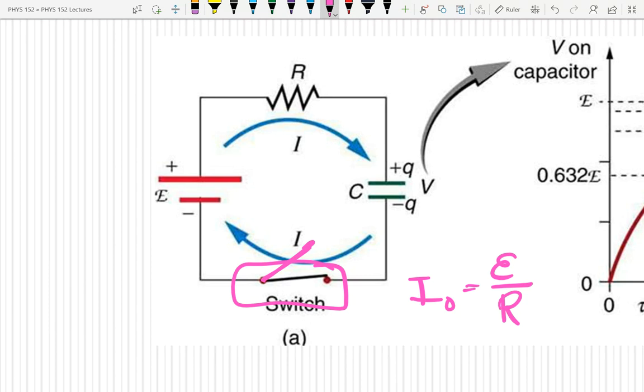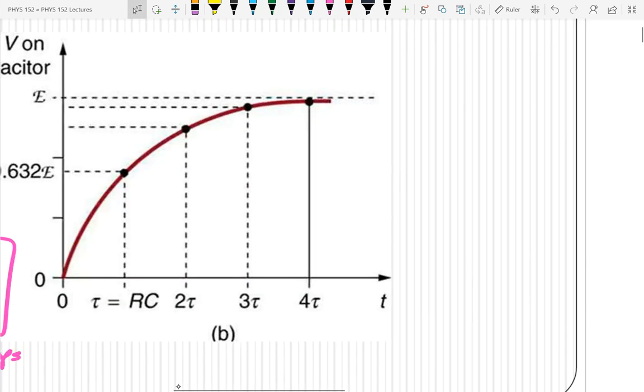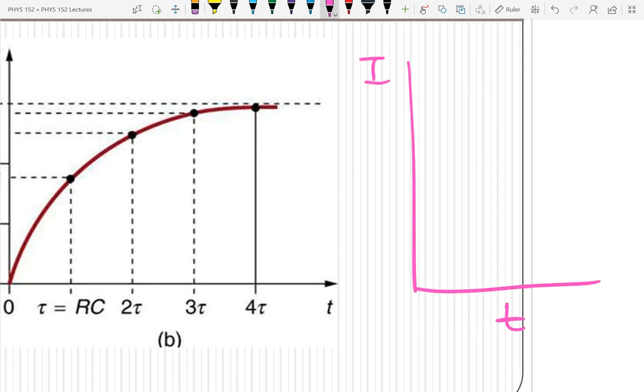So the instant you flip that switch, the entire voltage drop is across the resistor, which means you can calculate the initial current as I initial equals the EMF of the battery divided by R. Of course, current is charge flowing, so as soon as you get charge flowing, you start charging the capacitor. But if you charge the capacitor, then the voltage across the resistor is going to drop. And if the voltage across the resistor drops, the current is going to drop as well.